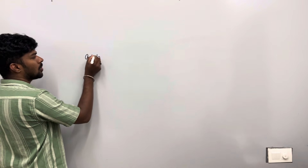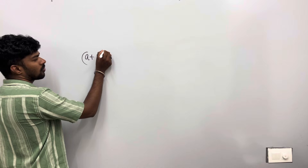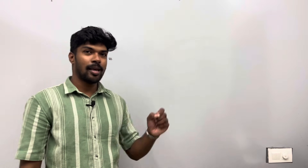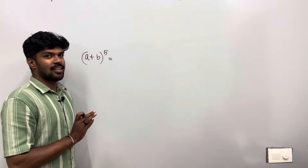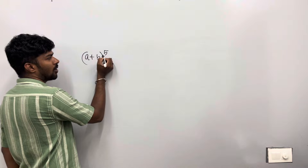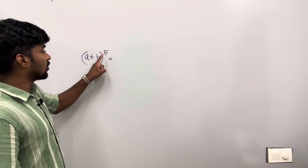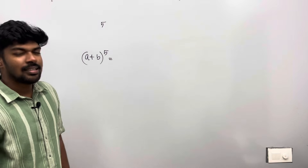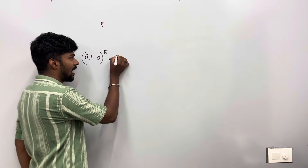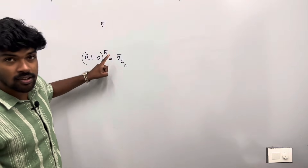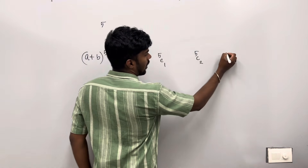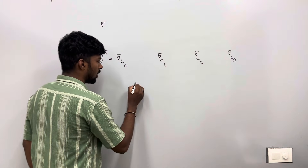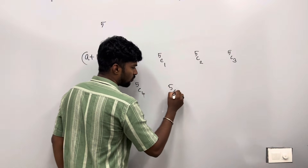A plus B whole raised to 5 — how do we do it? We do it using combinations: 5C0, 5C1, 5C2, 5C3, 5C4, 5C5. These are the binomial coefficients for the expansion.